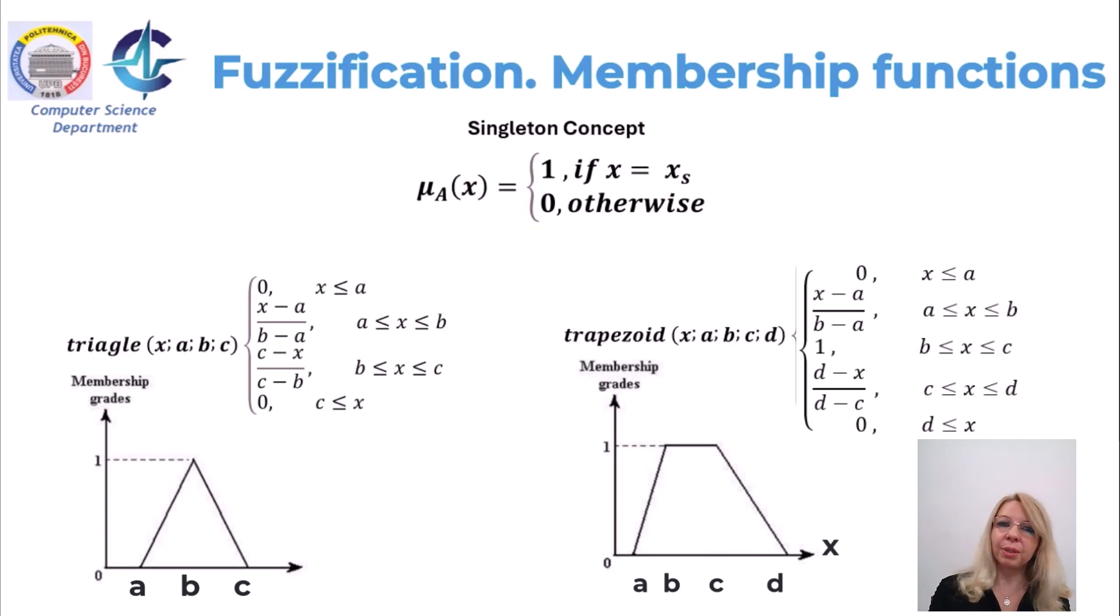Membership functions can be symmetrical or asymmetrical. They are typically defined on one-dimensional universe, but they can be also described on multidimensional universes. Thus, a curve represented in a one-dimensional universe will become a hypersurface in an n-dimensional universe. These hypersurfaces are simple mappings from combination of the parameters in the n-dimensional space to a membership value on the interval 0-1. This membership value expresses the degree of membership that the specific combination of parameters in the n-dimensional space has in a particular fuzzy set.